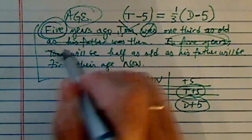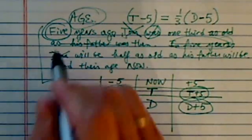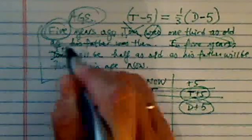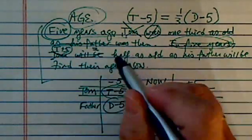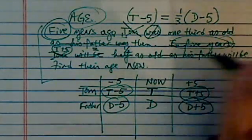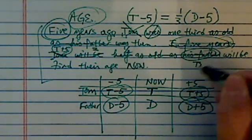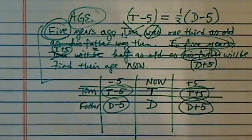In five years, then Tom, it's no longer T, but rather T plus five, because it's in five years, will be, means equal, half as old as his father. Well, his father in five years is D plus five.